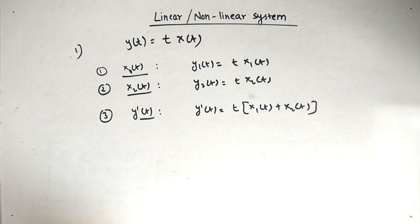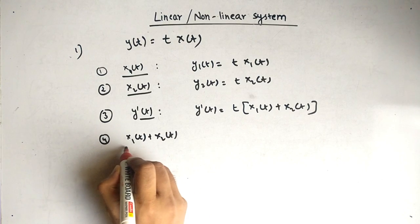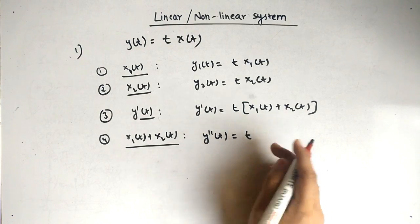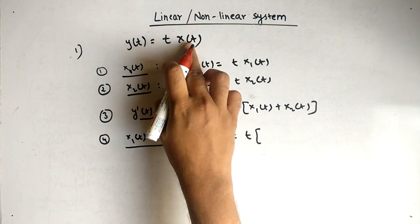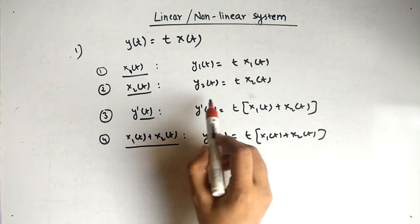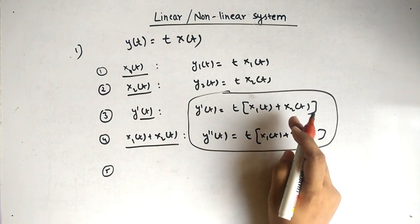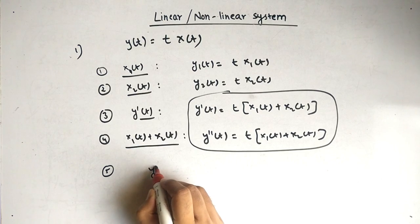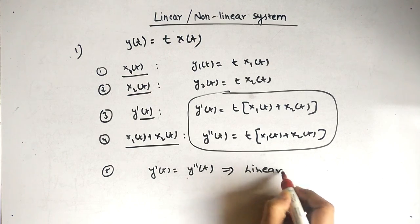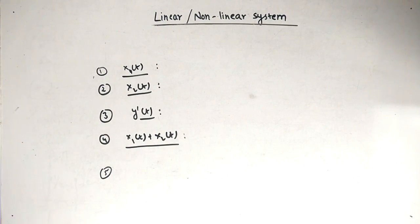Fourth step: input is x1 of t plus x2 of t. For y-double-dash of t, t remains as is and x of t changes to x1 of t plus x2 of t. You can see both are equal — y-dash of t equals y-double-dash of t. This means the system is linear.